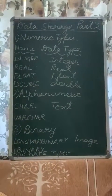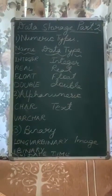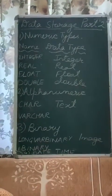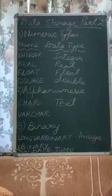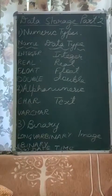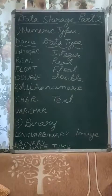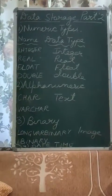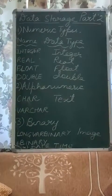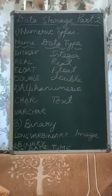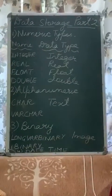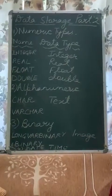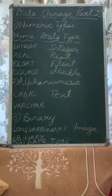If you are entering decimal values in the data and want to select or retrieve them, you will use the FLOAT data type. Then DOUBLE, spelled D-O-U-B-L-E, is used for long decimal values — for example, a decimal like 446.664. So these are your numeric data types.